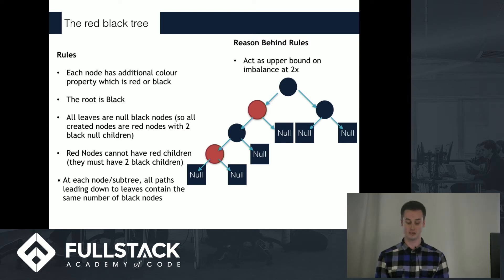Each node, in addition, has a color property, which is red or black. We always color the root node at the top to be black, and all leaves are null black nodes. Red nodes cannot have red children, so we can't have two red nodes in a row.